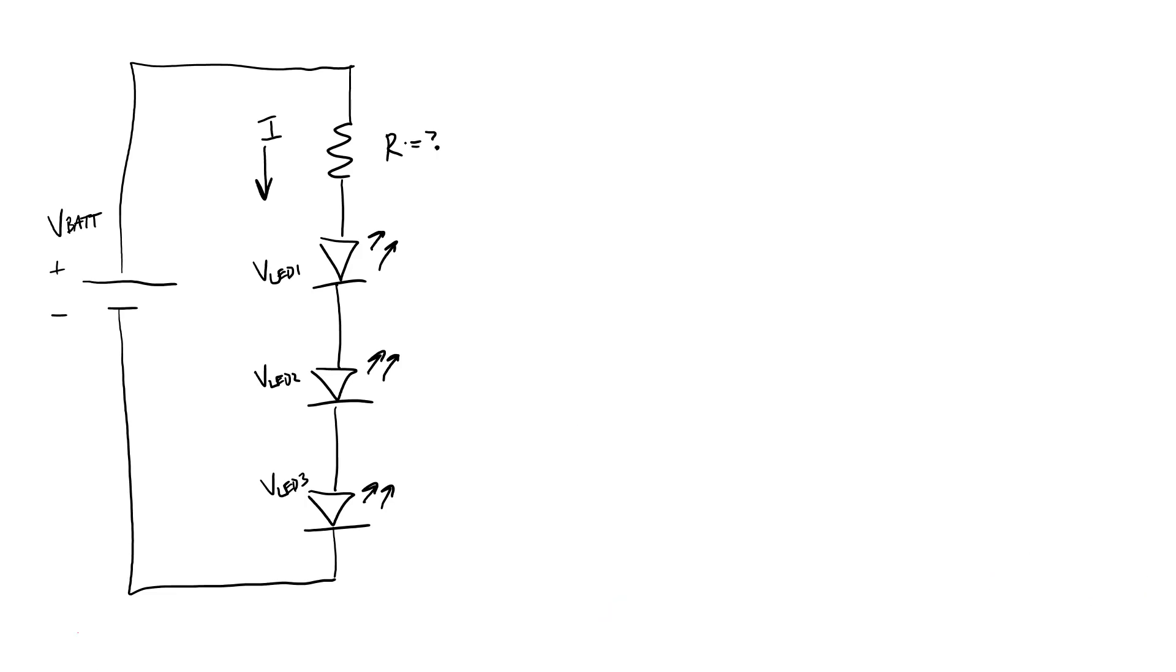If you did watch those videos, you might remember that the equation to solve for the resistor value in a circuit with a single LED is that R equals the battery voltage minus the forward voltage drop over the LED, all divided by the desired current through the LED. The only difference here is that we have combined multiple LEDs in series. So we need to add up the voltage drop across each of these individual LEDs because voltages add in series.